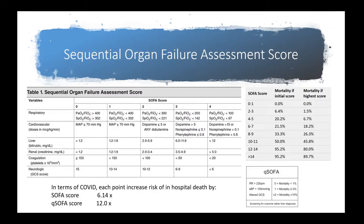In the context of COVID, the risk of in-hospital death increases with each point in both the SOFA and quick SOFA scores. Each point in the SOFA score increases risk by 6.14, and each point in the quick SOFA score increases risk by 12.0. For our patient, he had a high respiratory rate of 28, was not hypotensive, and had no altered GCS, giving him a quick SOFA score of 1, with an odds ratio of in-hospital death of 12.